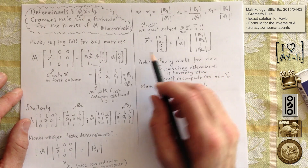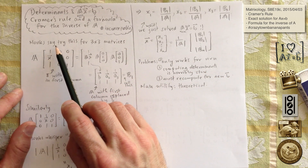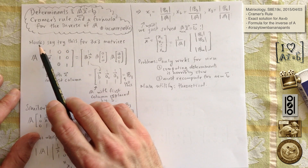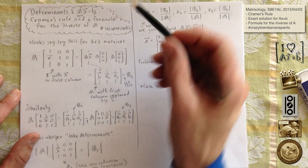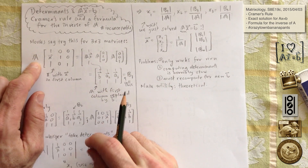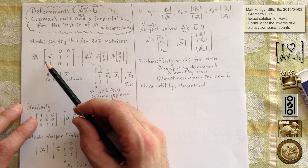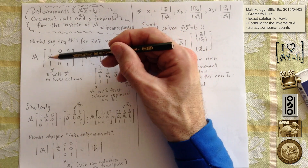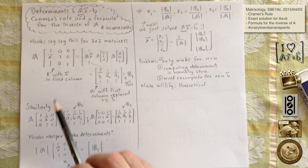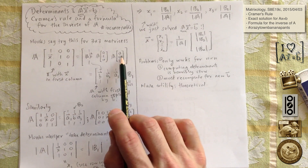Let's try this for three by three matrices. Let's do this strange thing: let's imagine we have a three by three. We'll be able to see it works for n by n's. Let's take the identity matrix and then replace the first column by x. So we do that, and then we multiply through.